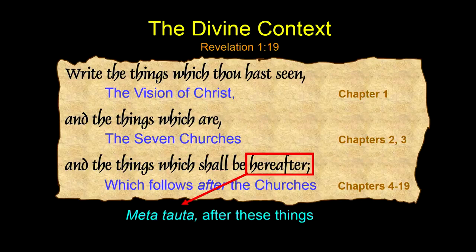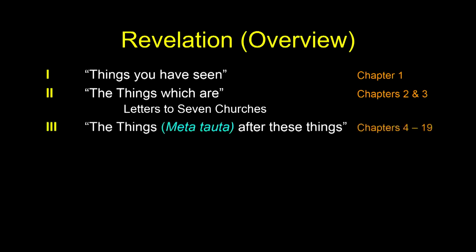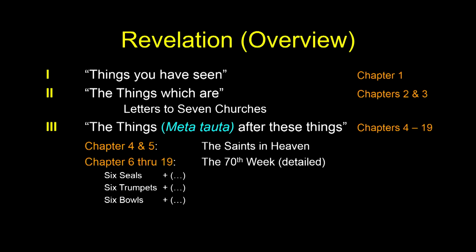From the seven churches, we go to the things which shall be — metatauta, hereafter — the things which follow the churches. That metatauta is a key partitioning phrase. The things which thou hast seen is chapter 1. The things which are, the present tense things, are the letters to seven churches. And then the things which are after that constitutes the bulk of the book, containing chapters 4 and 5, in which the saints are in heaven.